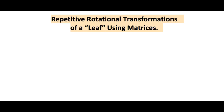In this video we're going to do repetitive rotational transformations of a leaf using matrices. I did another video for this a long time ago, but the multiplication was not specific for linear algebra courses and so it was in reverse order. This one I'm going to put it in the way that linear algebra courses do it: the transformational matrix times whatever our points are.